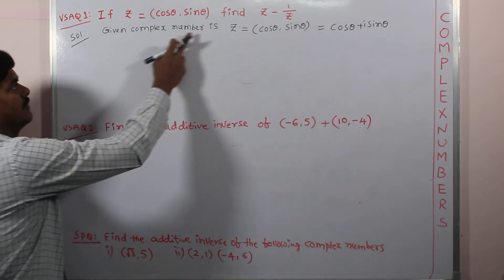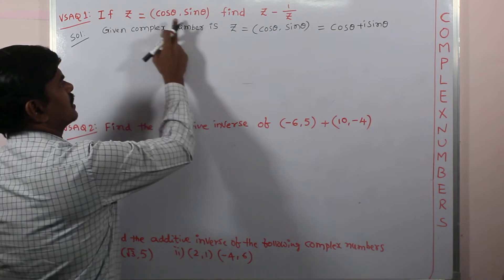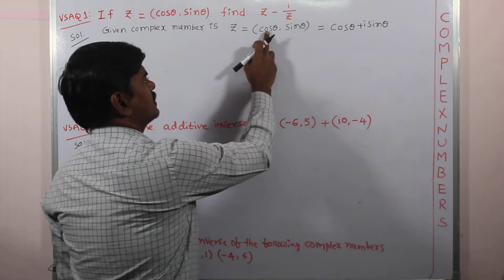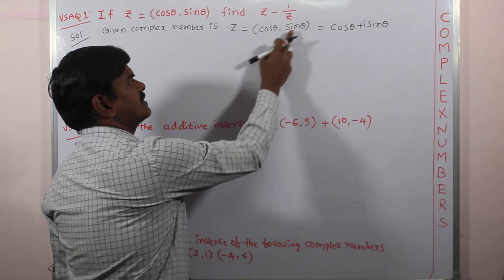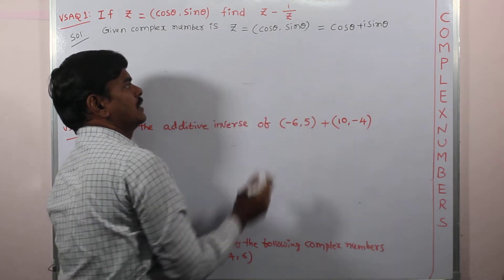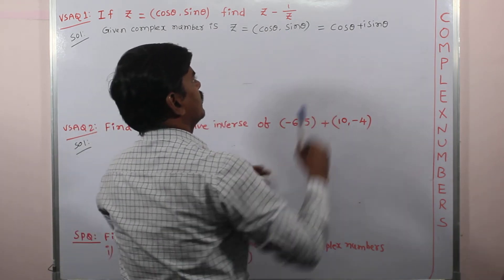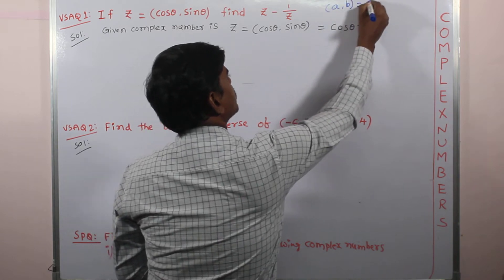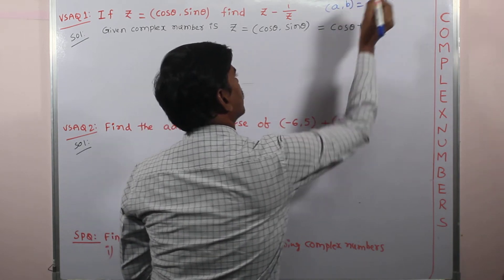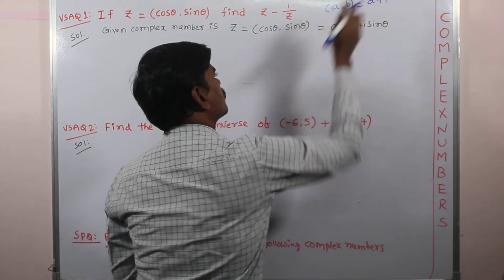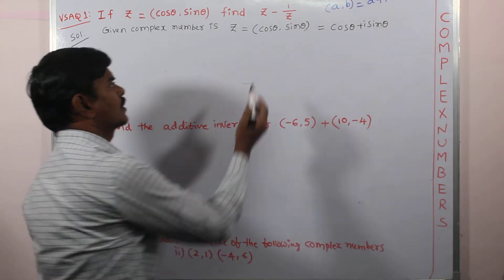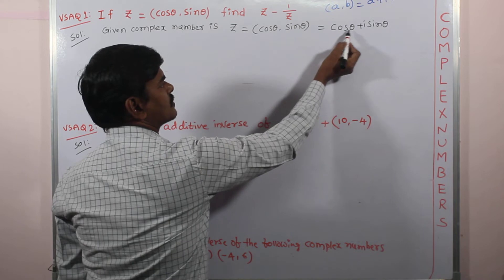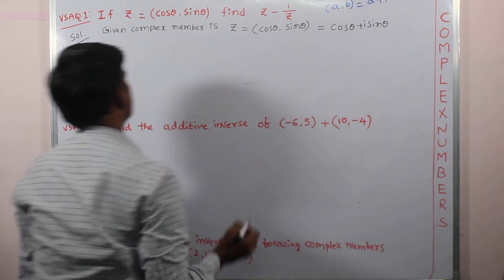We have given complex number z equals cos theta comma sin theta. Cos theta comma sin theta is in the form of a comma b. As you know, a comma b and a plus iota b are both equal — a comma b can also be written as a plus iota b. So cos theta comma sin theta can be written as cos theta plus iota sin theta.